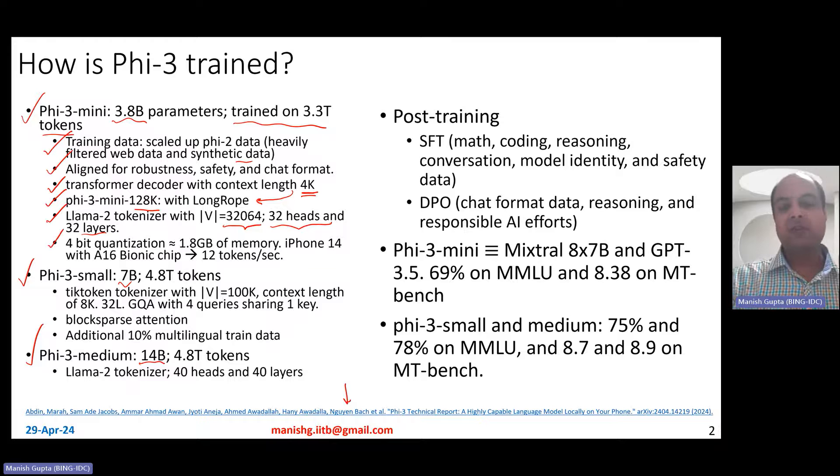So if you basically do a 4-bit quantization and load the model into RAM, you basically just need about 1.8 GB of RAM and they actually showed experiments where they have loaded the model on iPhone 14 with A16 bionic chip such that it gives you an inference speed of 12 tokens per second. There's literally a model that can run with the appropriate optimizations on a mobile phone.